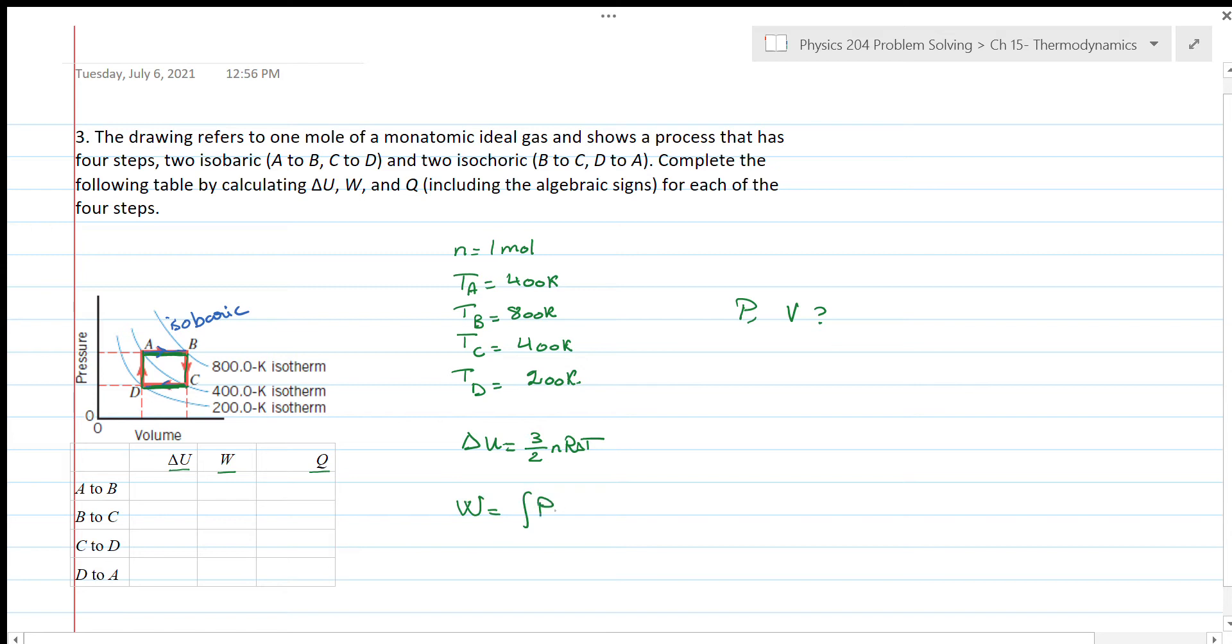And we know that regarding the work, the work is the integral of the pressure over the volume. If we consider the isobaric processes, pressure is constant, so this is just P delta V, and we can write this as nR delta T. Of course, I changed the formula for the work to be in terms of the temperature because this is the only given we have.